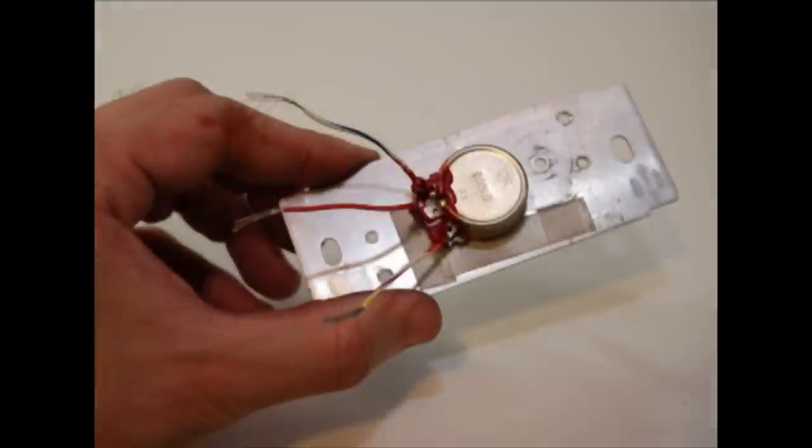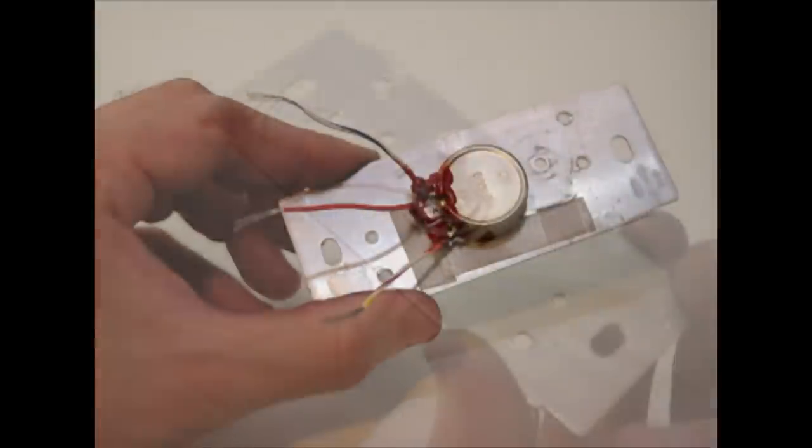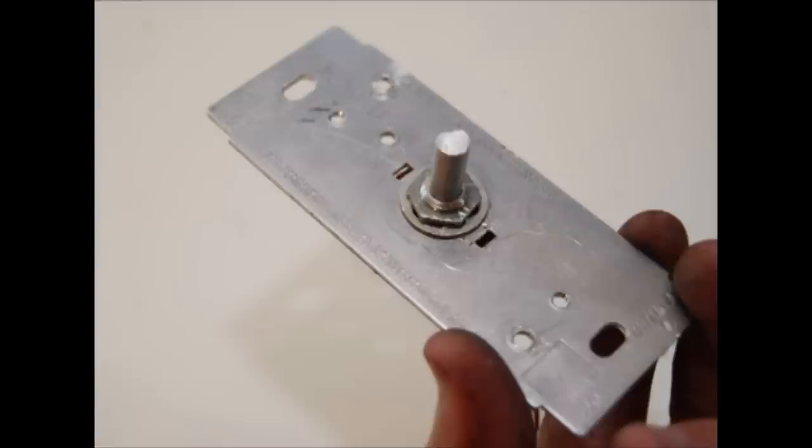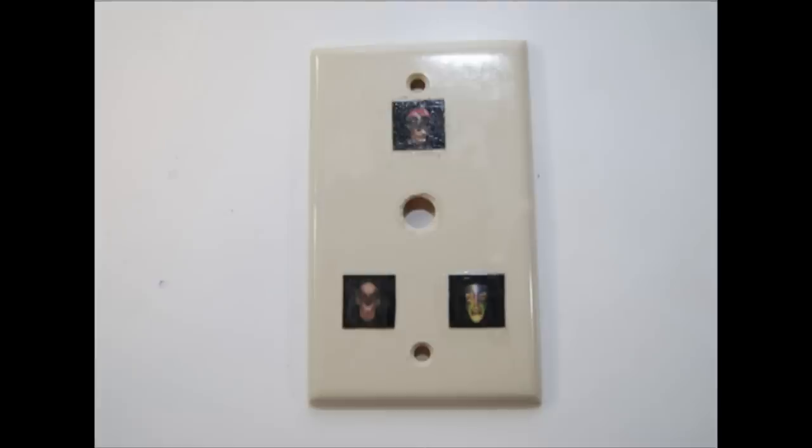Make sure it's screwed in nice and tight because you don't want it wiggling around when people are turning the knob. You can use a standard light switch plate, and if you're lucky you can find one with a hole pre-drilled. If not, you'll need to drill the hole yourself.